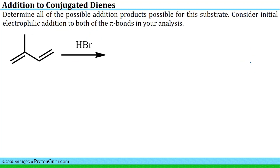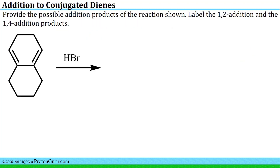In the previous problem, our diene was symmetric. If we take a look back at it, you can see that there's a plane of symmetry straight down the center before we do the reaction. So either of these two double bonds would be equivalent to one another in our initial electrophilic addition step.